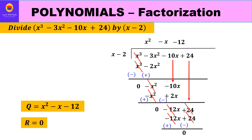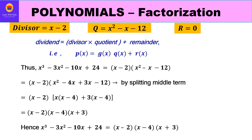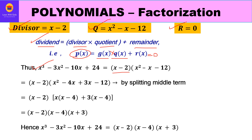Multiplying -12 by (x - 2) gives -12x + 24. Changing signs, -12x and +12x cancel, and +24 and -24 cancel, leaving remainder 0. So the quotient is x² - x - 12 and remainder is 0. By the division algorithm, the polynomial equals (x - 2)(x² - x - 12).